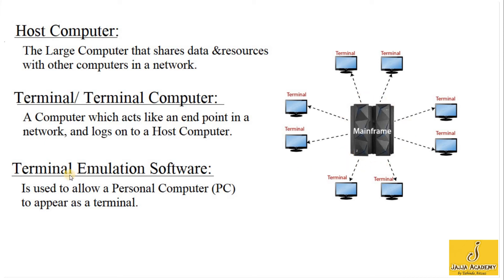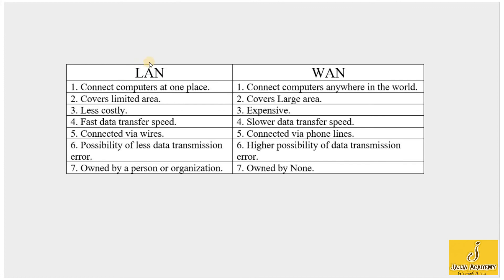Now let's see the differences between LAN and WAN. First, a local area network is used to connect computers at one place — in a building or group of buildings — whereas a wide area network connects computers anywhere in the world; the best example of WAN is the internet. So LAN covers limited area while WAN covers a large area.